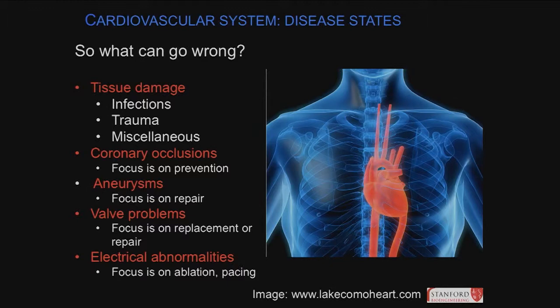Coronary occlusions are just plaques in the vessels, which can come from an embolus that shoots out — sometimes valves develop vegetations that flicker into the vessel and block it. Or you can have atherosclerosis from high cholesterol and high sugar levels where plaques start building at the sides of vessels, clog them, and once completely clogged it's a heart attack.